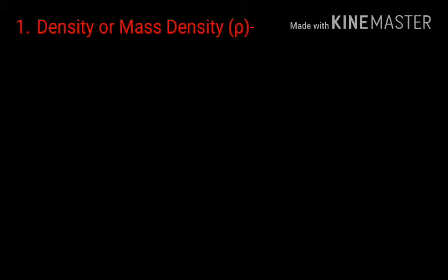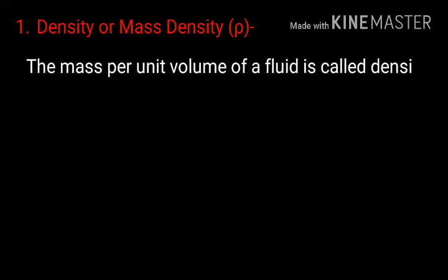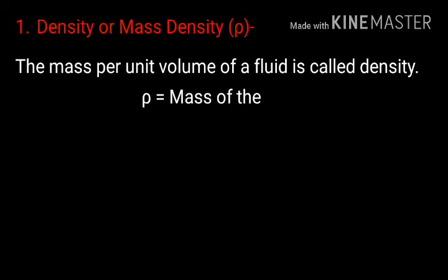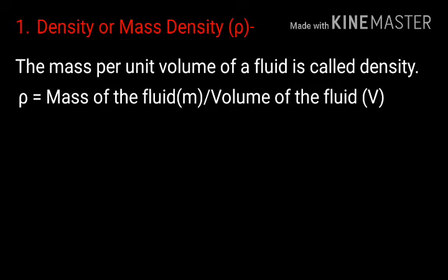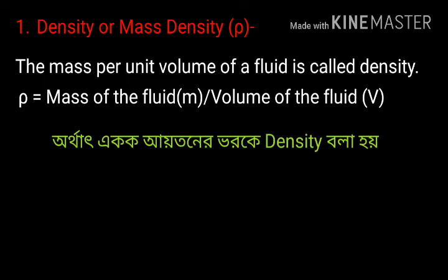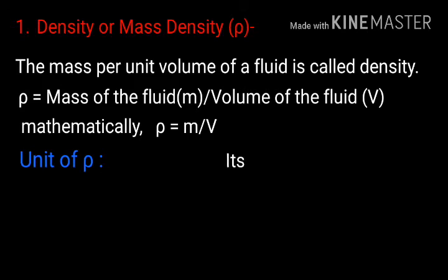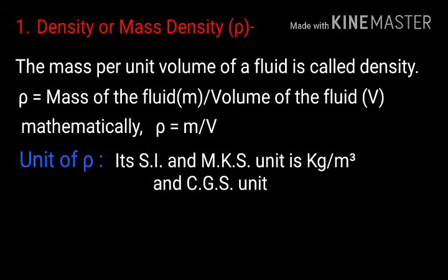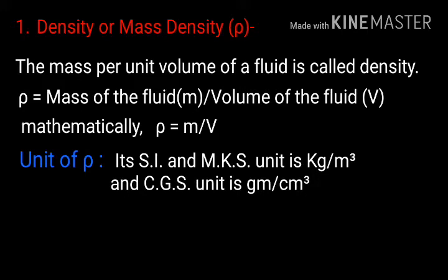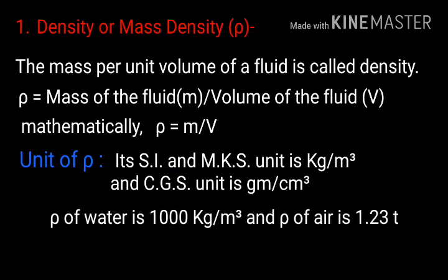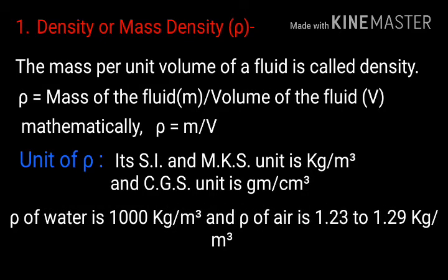First, density or mass density. The mass per unit volume of the fluid is called density. Therefore, rho equals to mass of the fluid by volume of the fluid. Mathematically, ρ = m/v. Its SI and MKS unit is kg per meter cube and CGS unit is gram per centimeter cube. The density of water is 1000 kg per meter cube and the density of air is 1.23 to 1.29 kg per meter cube.